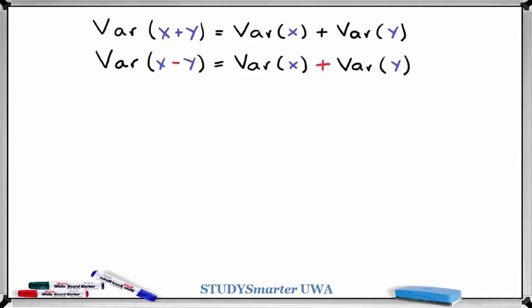Now if it bothers you that there's a plus in the right hand side of that second formula instead of a minus, then you need to think a bit more carefully about what variance represents.